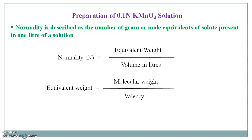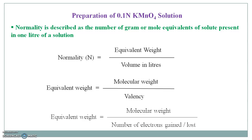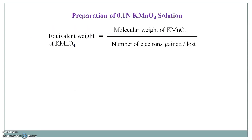Instead, there is involvement of electrons. So you have to consider this for calculation of equivalent weight — by taking the molecular weight and dividing it by the number of electrons gained or lost. The equivalent weight of potassium permanganate is the molecular weight of potassium permanganate divided by the number of electrons gained or lost.